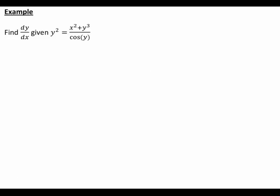Suppose we want to find dy/dx given y squared equals x squared plus y cubed divided by cos y. Implicit differentiation is going to be useful here because there's no obvious way of making y the subject of this expression. The quotient rule is also necessary because we can clearly see it's one function divided by another. The first step is always to differentiate both sides of the equation with respect to x.